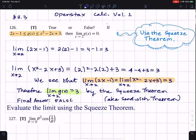So it would be true if limit of G of X as X approaches 2 was 3, right? Right, yeah.